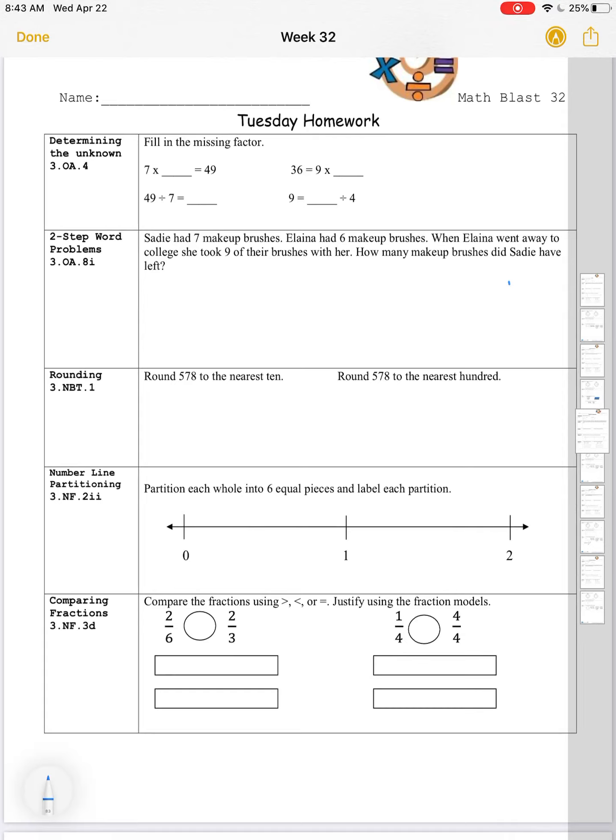Math Blast 32 Tuesday. Determining the unknown - fill in the missing factor. Seven times blank equals 49. That's seven groups of something. Seven times seven is 49, so 49 divided by seven would be seven. That means I have 49 total items and I'm dividing them or equally sharing them into seven groups or groups of seven. 36 is equal to nine times blank. Nine groups of four is equal to 36, so nine is equal to 36 divided by four. Those are related facts.